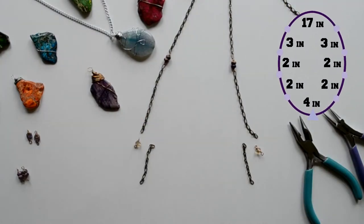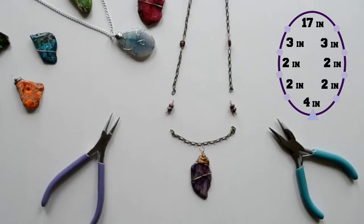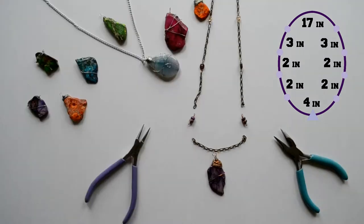Alright, so now you're going to get your four 2-inch chains and your beads and attach them all together with two on one side and two on the other side.